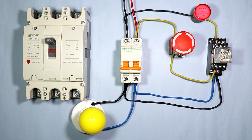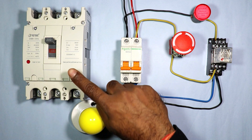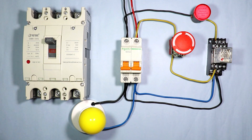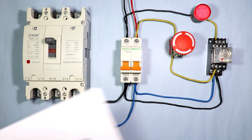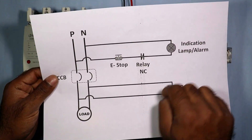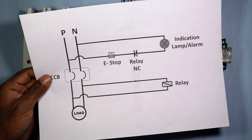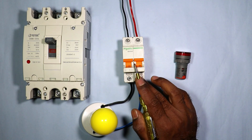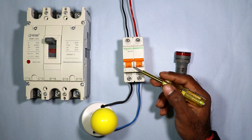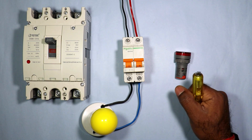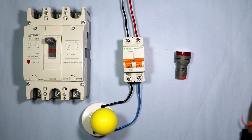In industries, for MCB or MCCB, the trip indication circuit is made according to this circuit diagram. For the MCB here and MCCB here, if we want to make a trip indicator circuit, this is the correct approach.